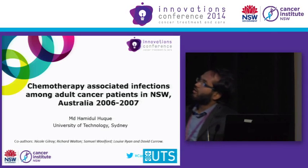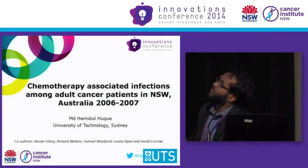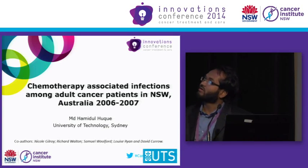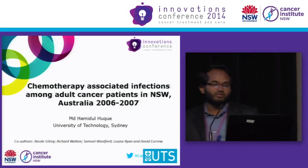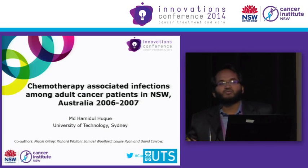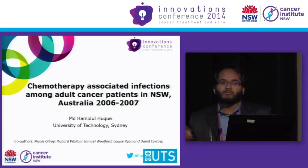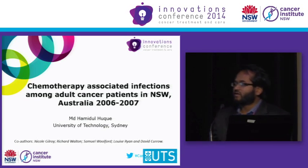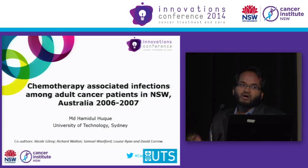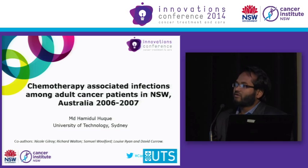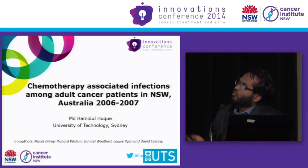I'm going to talk today on the chemotherapy-associated infections among adult cancer patients in New South Wales. This data is from a two-year period, from 2006 and 2007, and this is part of our project we are doing at Cancer Institute on the assessment of clinical variations of peripheral neutropenia across New South Wales. Thanks to the co-authors.